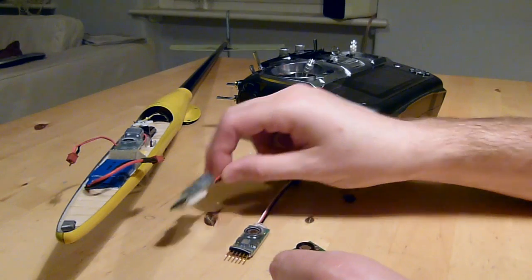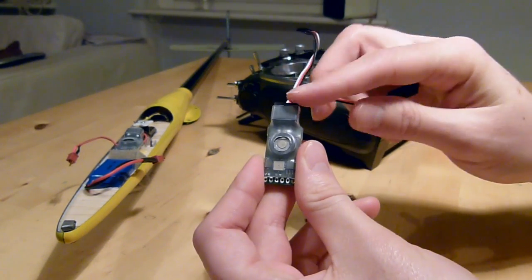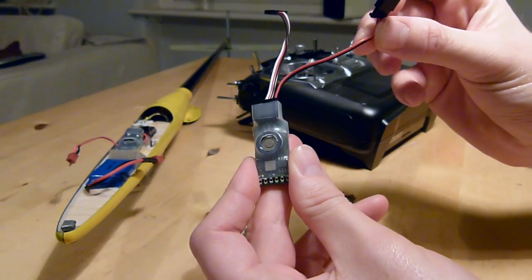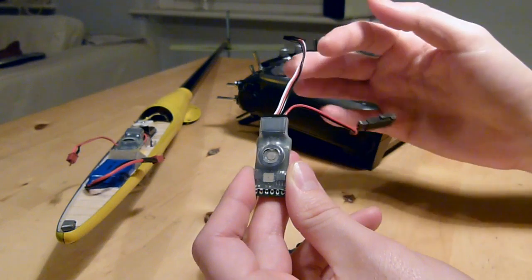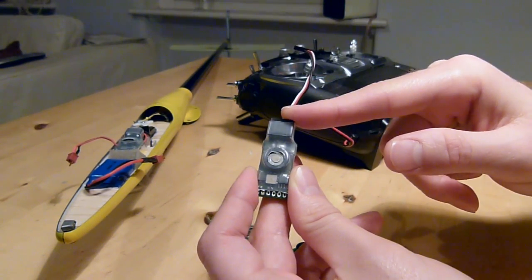You can use it in a couple of configurations. The typical configuration would be this, where you have a Recom switching regulator, this is a very efficient 1-amp switching regulator, and an input from a battery, probably a LiPo, and then an output, so this will power your glider from this switching regulator.